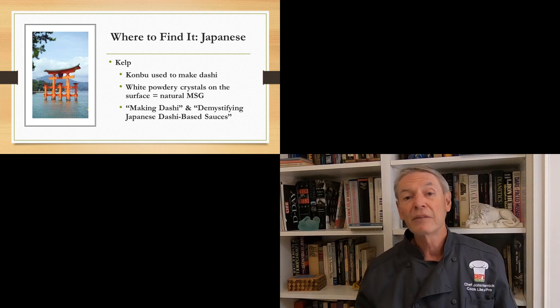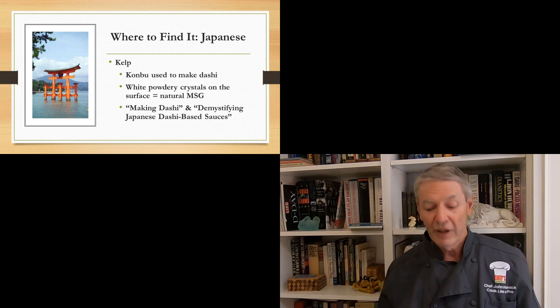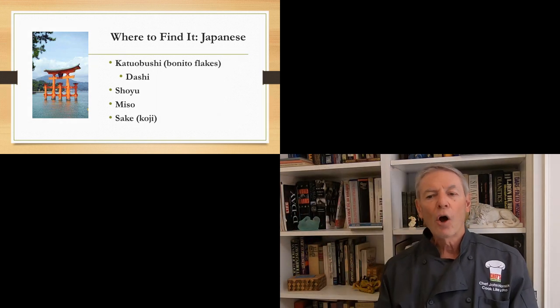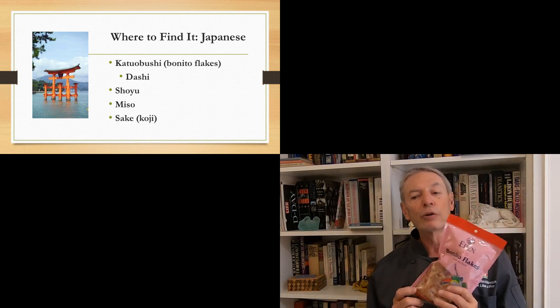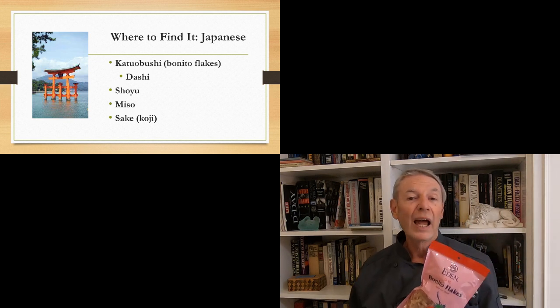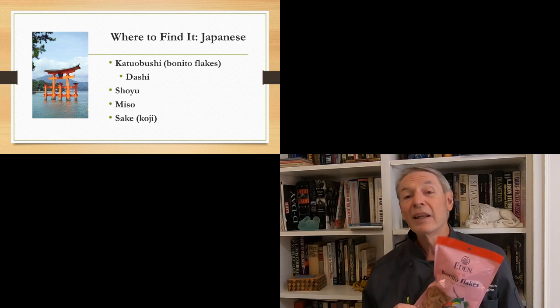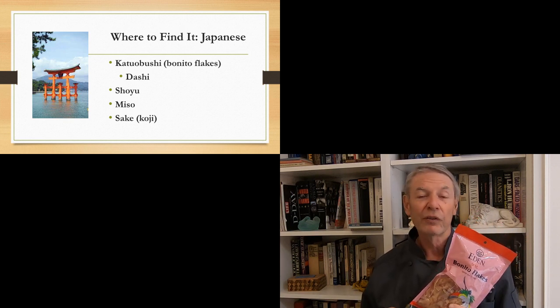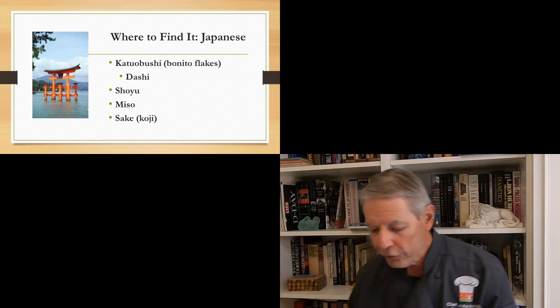Now, I have separate lessons on making dashi. And I also have a lesson called demystifying Japanese dashi-based sauces. Also, it can be found in all of the other pillars of Japanese cooking. And one of them is bonito flakes, also known as katsuobushi. And these are the dried and shaved skipjack tuna. And this is also the other basic ingredient of dashi. Dashi is only made with two things, or three things: water, kombu, and katsuobushi or bonito flakes.